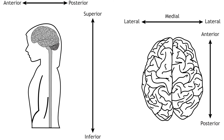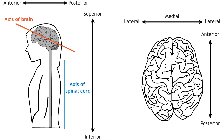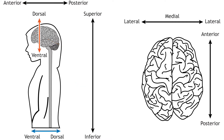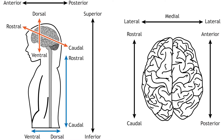The remaining terms point in different directions, depending on if they are referring to the axis of the brain or the axis of the spinal cord. The definitions in reference to the axis of the brain will be shown in orange arrows, and the definitions in reference to the axis of the spinal cord will be shown in blue arrows. Dorsal means toward the top of the brain or the back of the spinal cord. Ventral means toward the bottom of the brain or the front of the spinal cord. Rostral means toward the front of the brain or the top of the spinal cord.